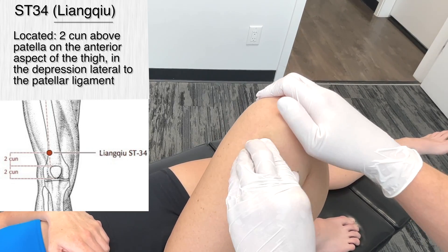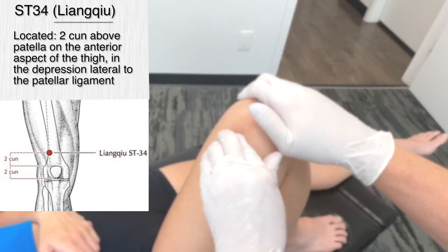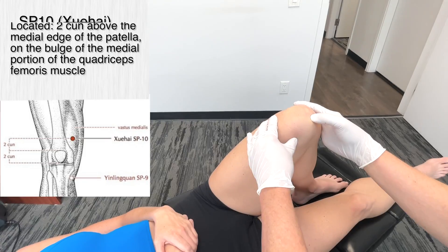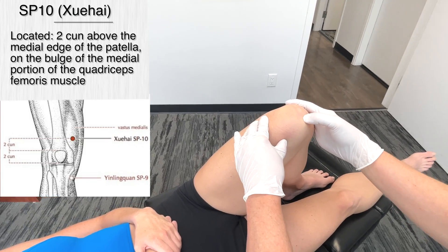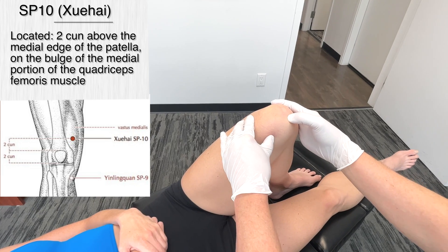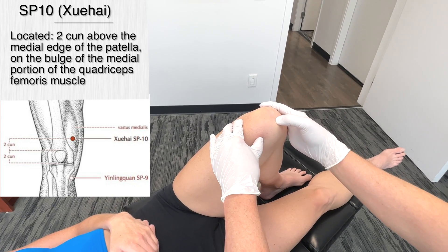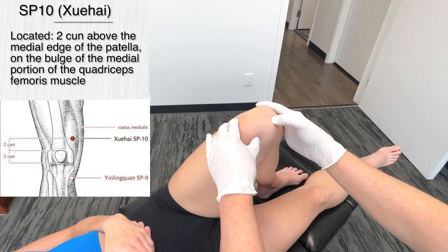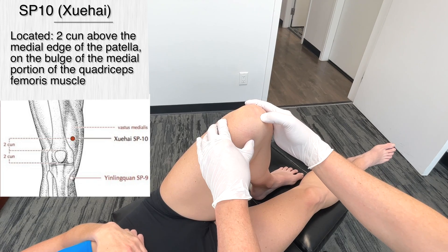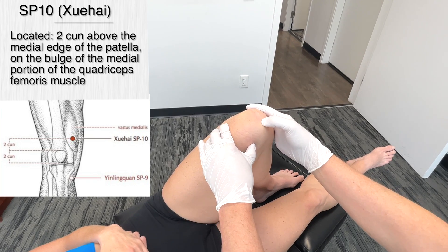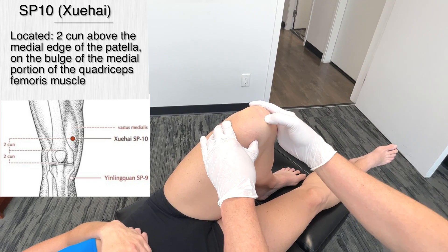That is Stomach 34. The next point we're going to cover is Spleen 10. Its location is found with the knee flexed on the medial aspect of the thigh. The point is two cun above the medial superior border of the patella.